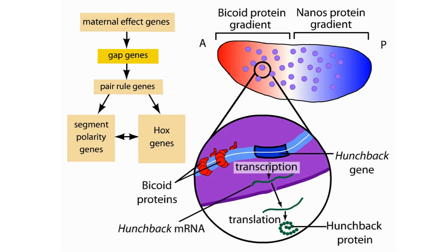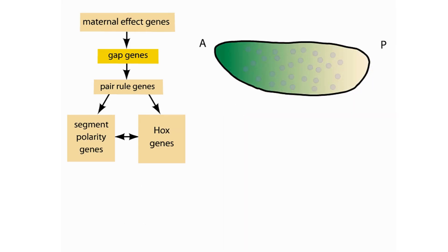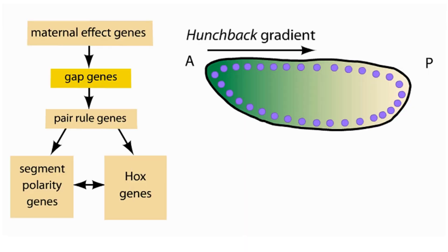The hunchback mRNA is then translated into hunchback protein. Nanos has an opposing function. At the posterior pole, it inhibits the release of bicoid. The hunchback protein also forms a gradient. Like bicoid, the hunchback protein is more concentrated at the anterior end. Note that although bicoid and nanos proteins are no longer shown in the embryo, they are still present.